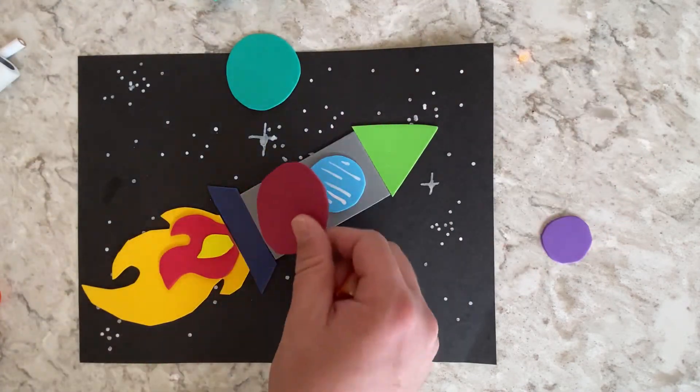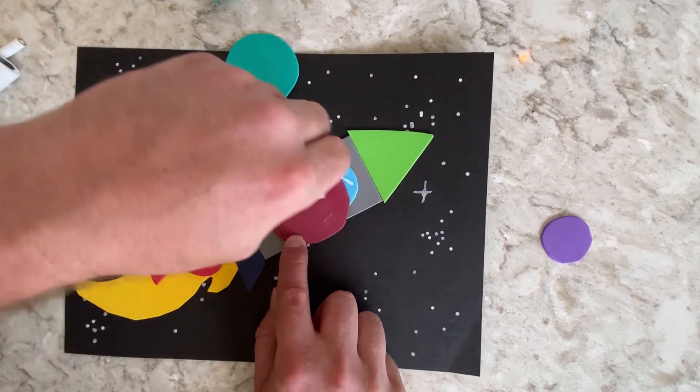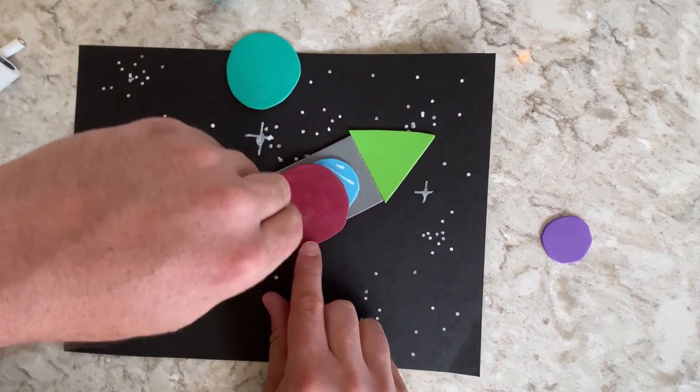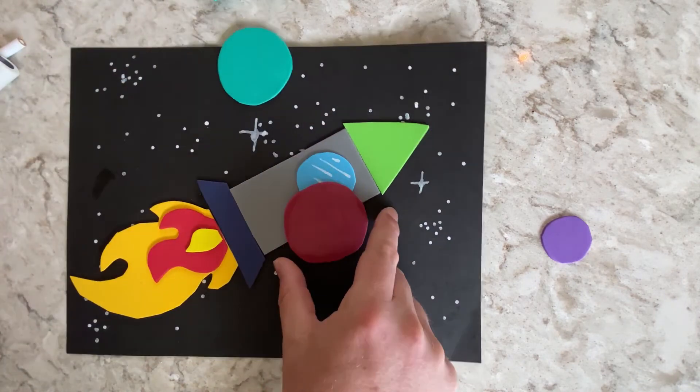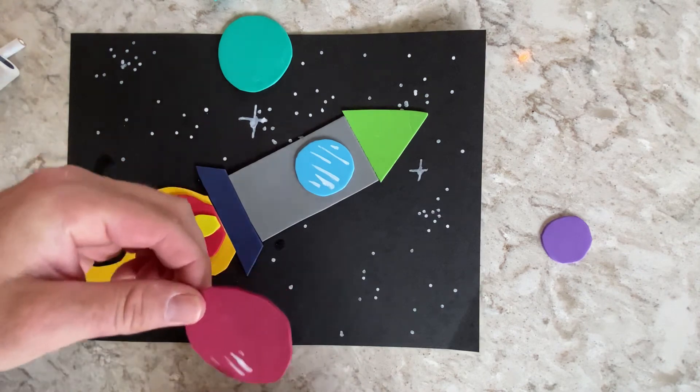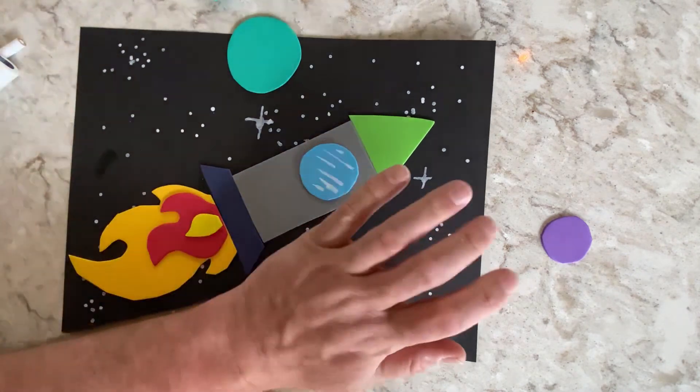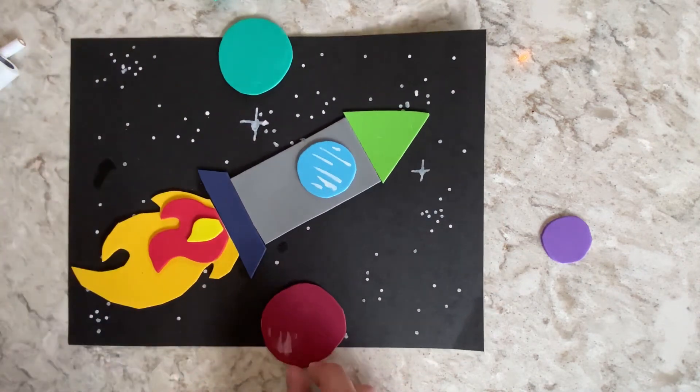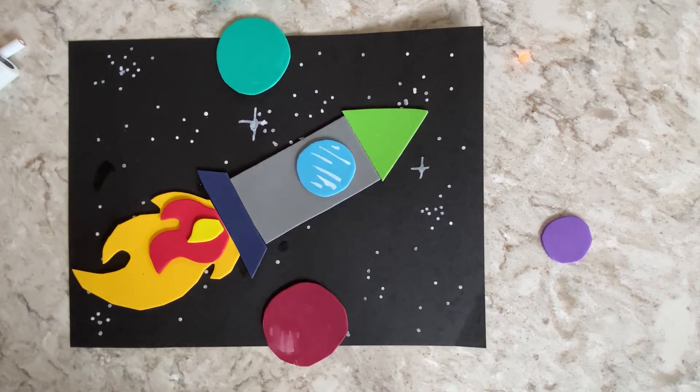And I'm going to do that with this one. And you can use whatever colors you want. You can make as many planets or as little planets as you want. Oh, I got some white paint on this planet, but that's okay. All right, we're going to put that there.